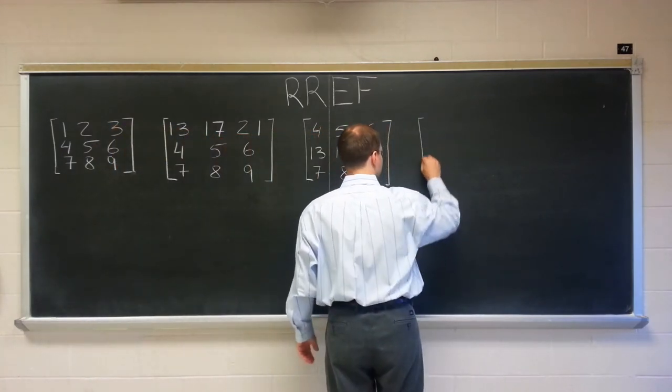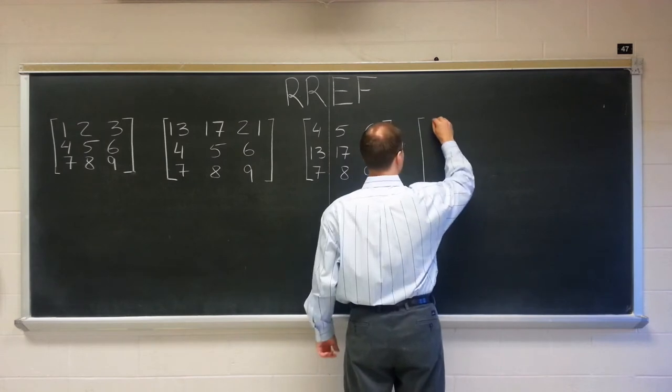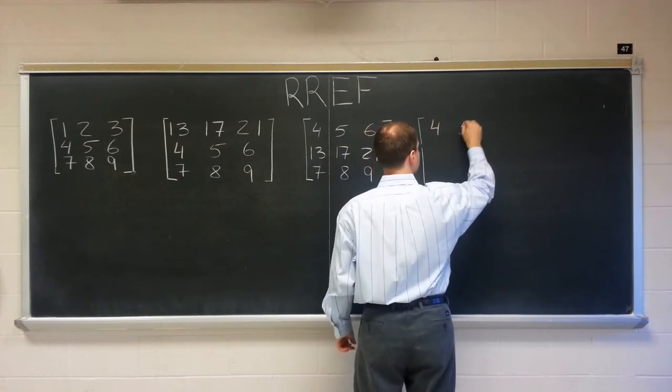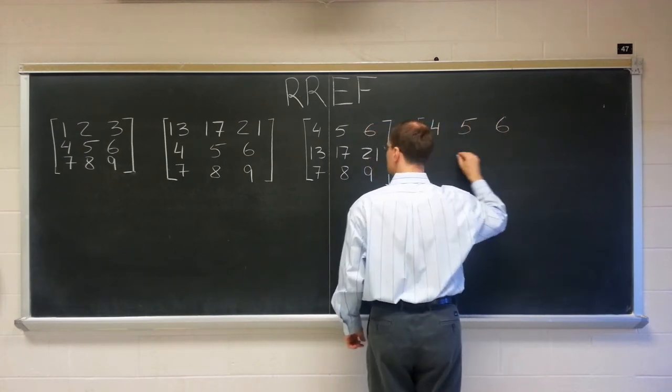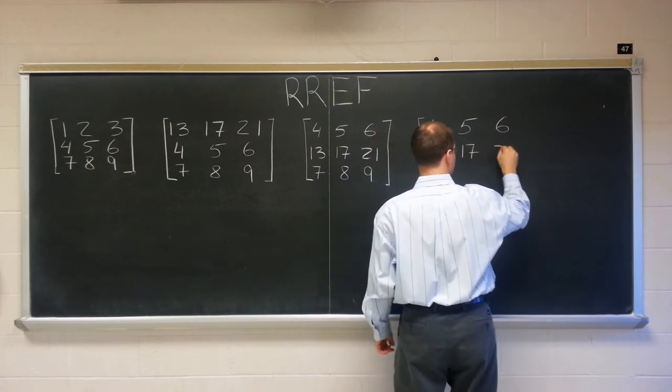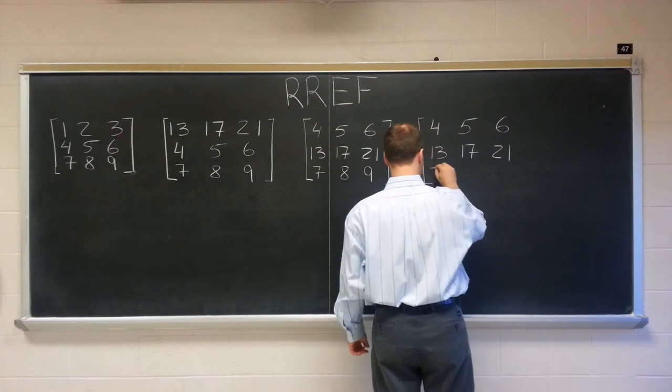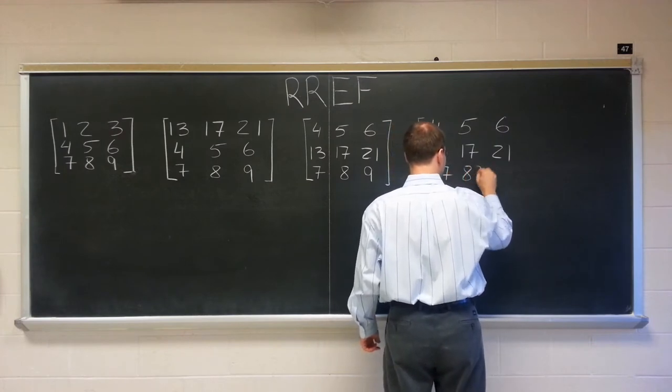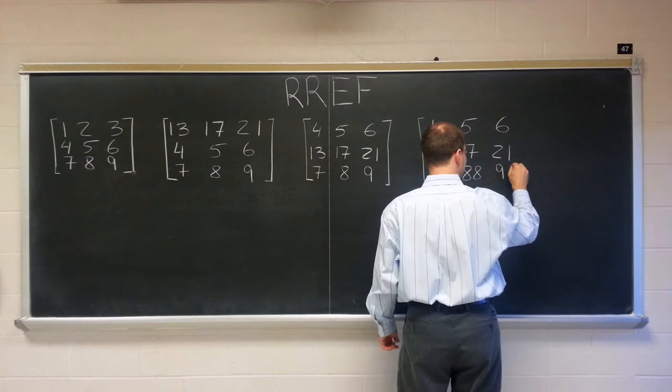Let's do it for this matrix, right here. 4, 5, 6, 13, 17, 21, and 77, 88, and 99.